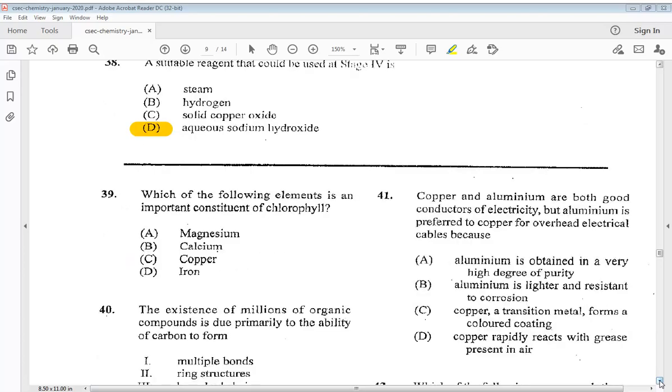Question 39. Which of the following elements is an important constituent of chlorophyll? A magnesium, B calcium, C copper, or D iron. So we know it is A magnesium.